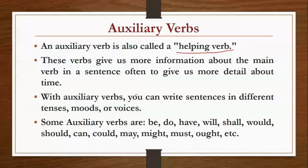With auxiliary verbs, you can write sentences in different tenses, moods, and voices. Using them, we can write our sentences in any way — any tense, any mood, or any voice. Some auxiliary verbs are: be, do, have, will, shall, would, should, can, could, may, might, must, ought, etc. Today we will study three of these: be, do, and have.